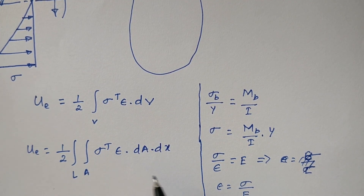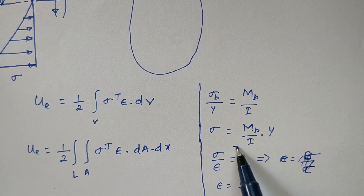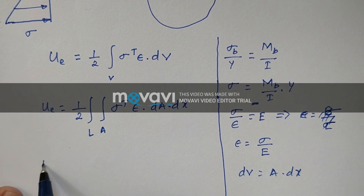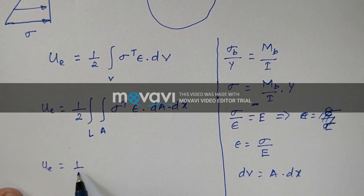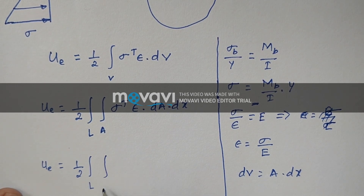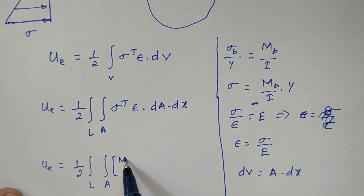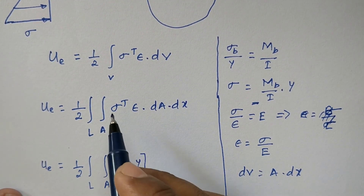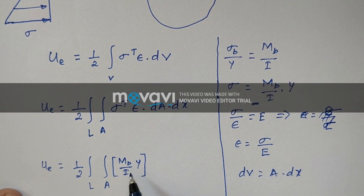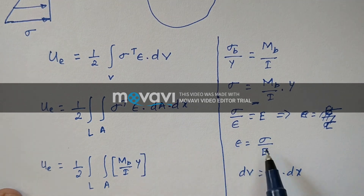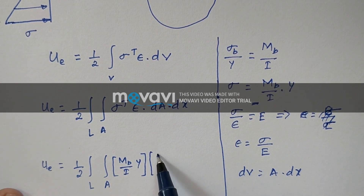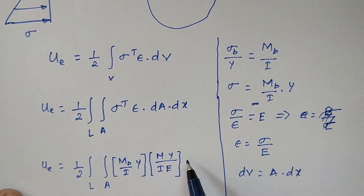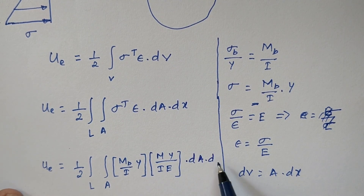Now we will substitute sigma as (m_b / i) times y, and strain as sigma divided by E. So we can rewrite this equation as 1/2, over the length, over the area: (m_b / i) times y, and strain is sigma by E, giving us (m·y) / (i·E) times dA dx.